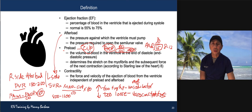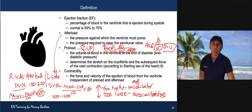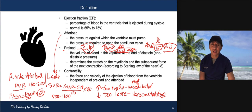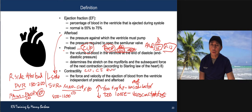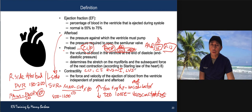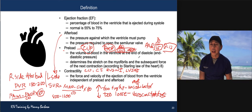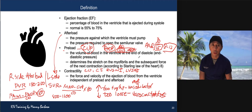Contractility is assessed via cardiac output and cardiac index. Some hospitals use right or left ventricular stroke work index for contractility. Medications that improve contractility include milrinone, dobutamine (Dobutrex), and intra-aortic balloon pump support.